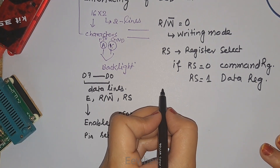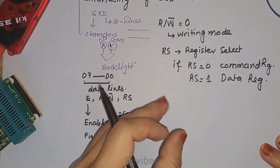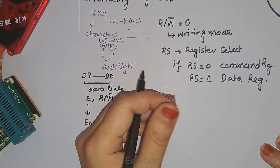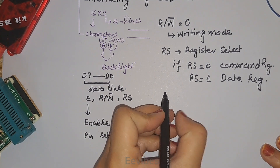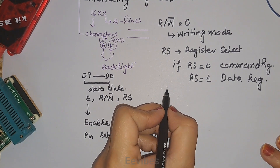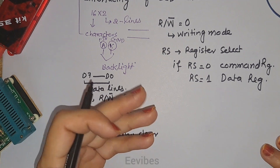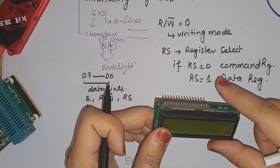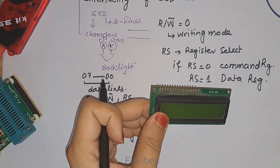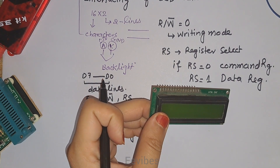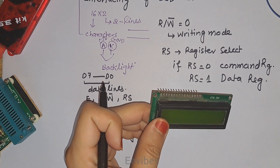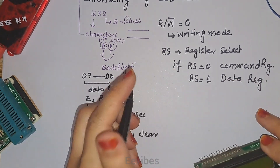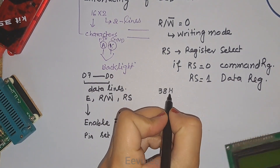For better understanding: when the command register is selected, we actually configure the LCD before issuing data to it. By configuration we mean that first we have to inform the compiler what type of LCD you are going to use. If your LCD is two lines with a 5x7 dot matrix, then you will issue the command 0x38 to it.